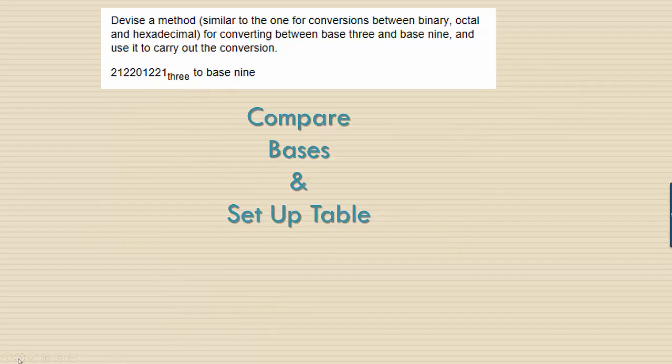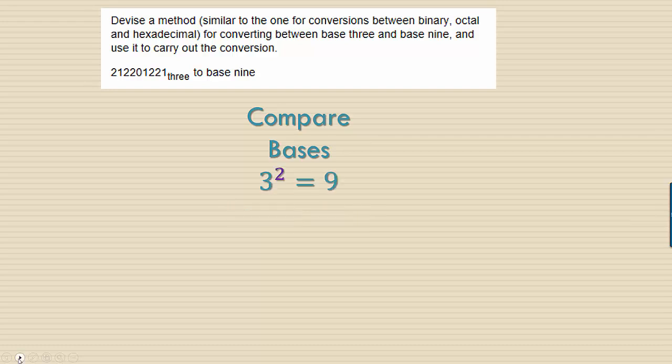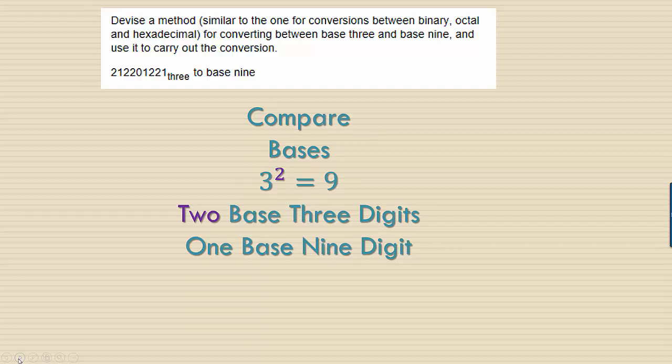Here we have an example that says devise a similar method for converting between base 3 and base 9 and use it to carry out the conversion. The key here will be two steps. First comparing the bases to determine how many digits we need and then setting up a table where we actually list out the equivalent numbers. 3 to the second power is 9 so that means that for every 2 base 3 digits we convert to 1 base 9 digit.